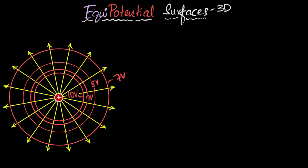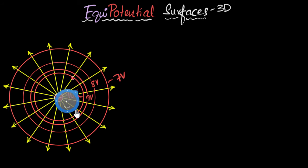But why is it that if the field becomes weaker, the equipotential surfaces go farther away? Pause and think about this. Here's how I like to think about it. Consider a tiny test charge on the 10-volt equipotential surface. If I let go of it, the electric field will push it and it'll accelerate, moving from this equipotential to the next — the nine-volt equipotential. Because the force is very strong in a strong electric field region, it will accelerate very quickly, gain kinetic energy very quickly, and as a result lose potential energy very quickly. In a very short distance, it would have gone from the 10-volt to the nine-volt equipotential surface.